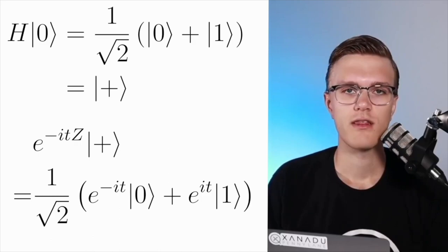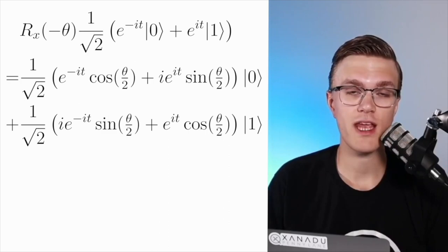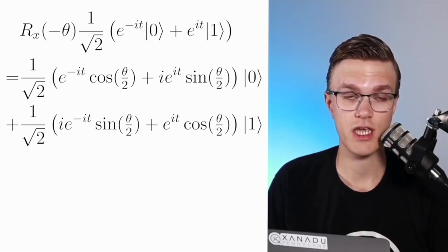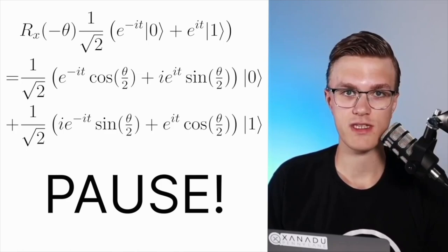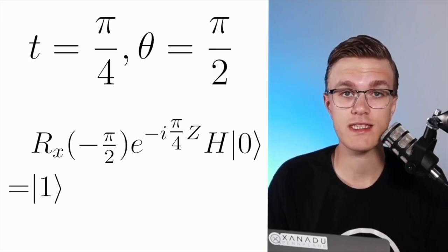Then consider what happens to our state if we apply a Pauli-X rotation with a negative rotation angle. The state we end up with is what's on the screen right now, and we left the time and angle for the time evolution and Pauli-X rotation completely unspecified. Can you work out what the time and angle need to be in order to get the ground state of our Hamiltonian? Pause the video right now to work this out. If you plug in these values, we get that the state we end up with is actually the ground state of the Hamiltonian. This is essentially a large part of the bread and butter of QAOA.